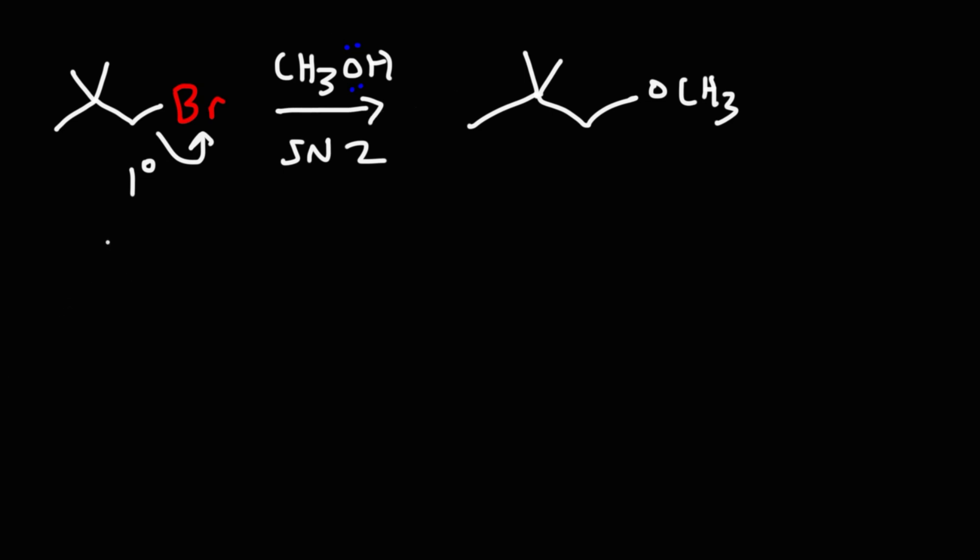So when the leaving group leaves, we'll get a primary carbocation. Now this primary carbocation is adjacent to a quaternary carbon. So what we're going to get is a methyl shift. And this is going to lead to a more stable carbocation intermediate. So even though it's primary, and most primary alkyl halides favor an SN2 reaction, the fact that we can get a methyl shift does favor the SN1 reaction, in addition to the fact that we have a protic weak nucleophile, a protic solvent and a weak nucleophile. All of that increases the likelihood of us getting the SN1 reaction.